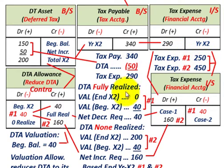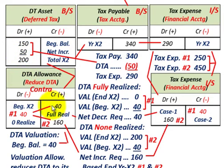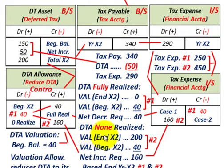Now let's look at Case 2: the deferred tax asset — none of it would be realized. We're sitting with $200,000 in our deferred tax asset and a beginning balance of $40,000 in the valuation account, but we're saying that none of the $200,000 of deferred tax asset would be realized.